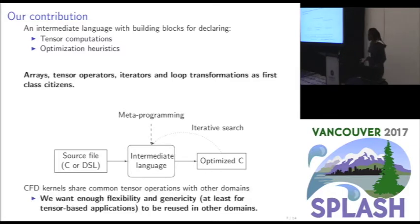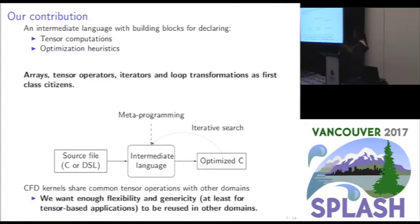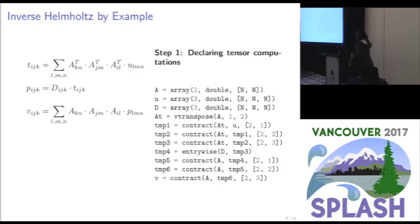Since CFD kernels share several common tensor operators with other domains, like tensor contraction, instead of just building an IL suitable only for CFD we wanted enough flexibility and genericity to apply this intermediate language in other domains as well — at least at the level of tensor applications, and with time possibly more generic than that. As an example, with inverse Helmholtz the first step is simply to declare the computation.